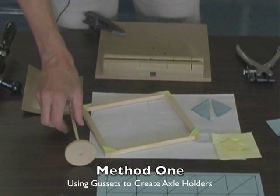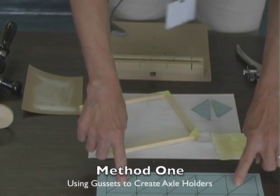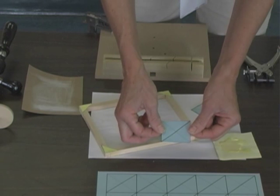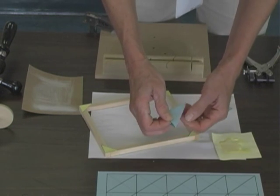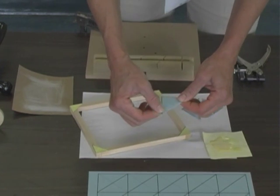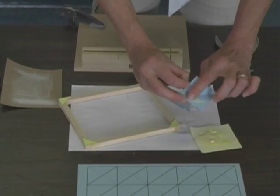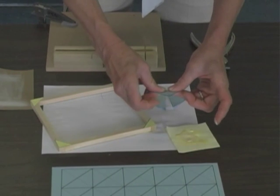The first method is going to be the gusset method. Using your blue gussets, this time we're not cutting triangles, we're cutting squares, and we're folding that square on the diagonal and then putting some glue in the center and gluing them so that they stay completely shut.